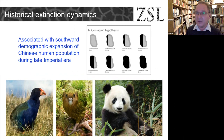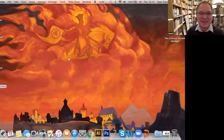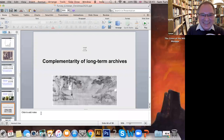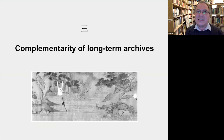Sam's PowerPoint crashes — he asks the audience to pour themselves some mulled wine while he reboots, then continues. The third area of information is the complementarity of long-term archives: rather than relying on single sources, combining historical records, fossil records, ancient DNA, and oral traditions can yield a wider, more synthetic understanding of the past for conservation.